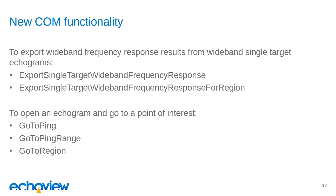We've also added three new 'go to' methods which open an echogram and jump to a point of interest. This is really useful for semi-automated processing where you want to automate a bunch of steps but then check particular points of interest that you've identified. We can do this using go to ping, go to ping range, and go to region. I've prepared a demonstration script with pop-up message dialogues that show what the script is doing — you wouldn't usually do this, but it helps demonstrate automation techniques.